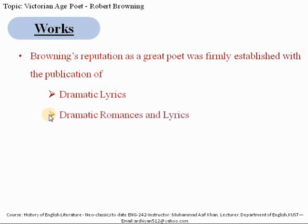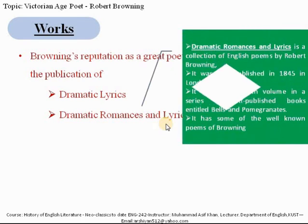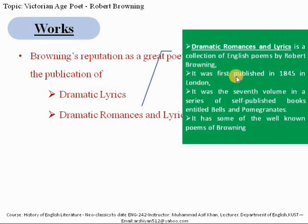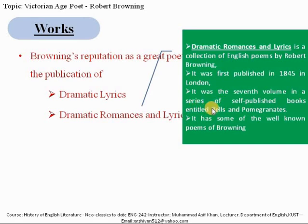The second important work in this group is Dramatic Romances and Lyrics, again a collection of English poems by Robert Browning, first published in 1848 in London. It was the seventh volume in the Bells and Pomegranates series that Browning was self-publishing, and this collection contains some of his well-known poems.